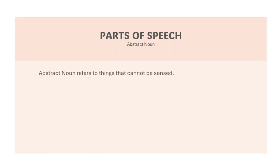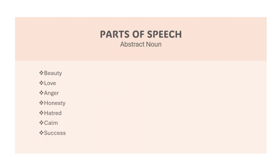Now we have the abstract noun. Abstract noun refers to things that you cannot see, smell, or touch. For example: beauty — you cannot smell beauty or touch it. Love, anger, honesty, patience, calm, success — we don't see them. Wisdom, sleep, wealth, surprise — we don't see them.